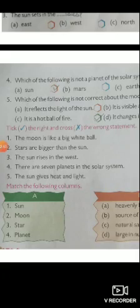Exercise E: Mark right or wrong. The moon is like a big white ball, right. The stars are bigger than the sun, many stars are bigger than the sun, right. The sun rises in the west, wrong. There are 7 planets in the solar system, wrong. The sun gives heat and light, right.